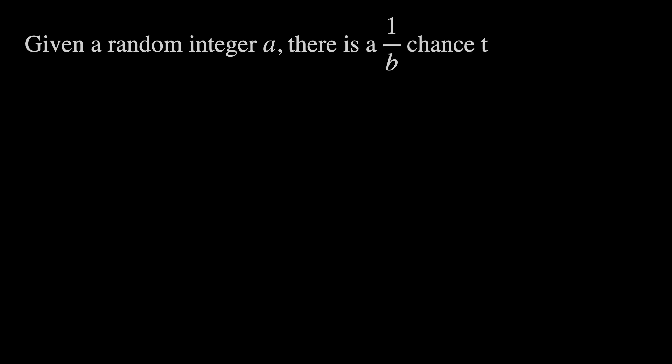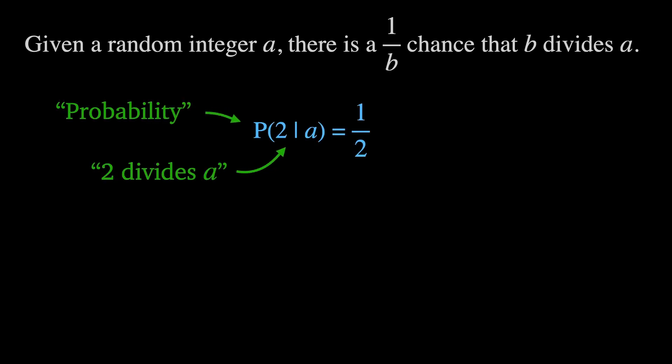So, to start with, given a random integer A, there is a 1 over B chance that B divides A. For example, the probability that A is divisible by 2 is a half or half of all integers are even. A third of all integers are divisible by 3 and a fifth of all integers are divisible by 5. Notice how I've only included prime numbers here. That's because if a number is divisible by some integer, prime or not, there will always exist a prime divisor of that number. And so, for the rest of this, we only need to consider prime divisors.